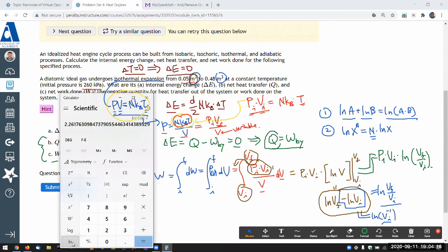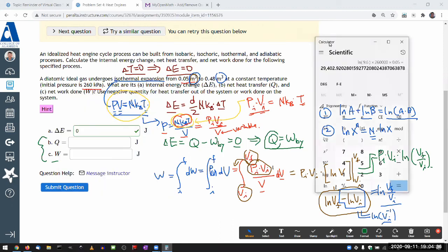Multiply that by the product of initial pressure, 260 kilopascal, 260 times 10 to the power of 3 pascal times the initial volume, 0.05 cubic meter. And I kept everything in basic SI units, so I should get the answer in joules. So 29,000, about 400 joules, 29,400 joules.